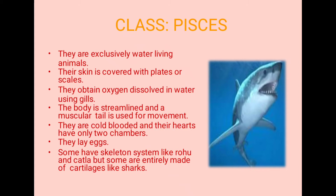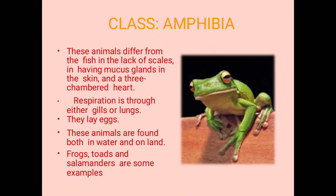They are cold-blooded animals, and their hearts have two chambers — one auricle and one ventricle. They lay eggs, meaning they are oviparous. Some have a bony skeleton like rohu and catla, but some are entirely made up of cartilage, like sharks. So some have bones and some have cartilage. This was class Pisces, in which all fishes come.